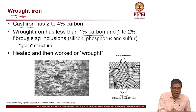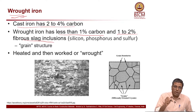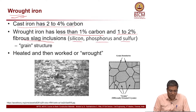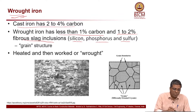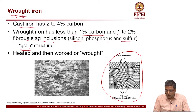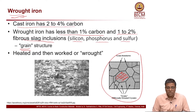Wrought iron also has 1 to 2 percent slag — that is the key ingredient. So you have both carbon and 1 to 2 percent slag, mainly silicon, phosphorus, and sulfur — these are the contents present in the slag.